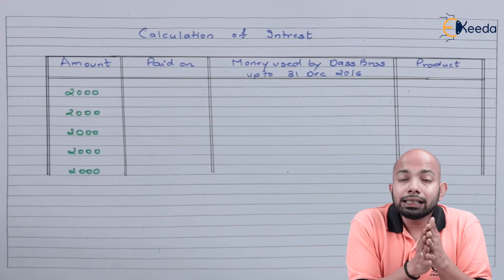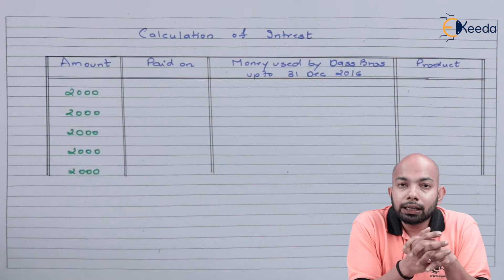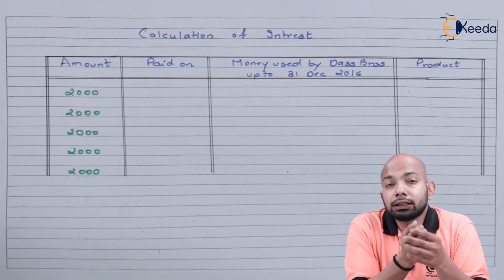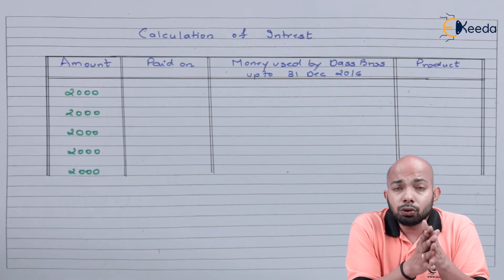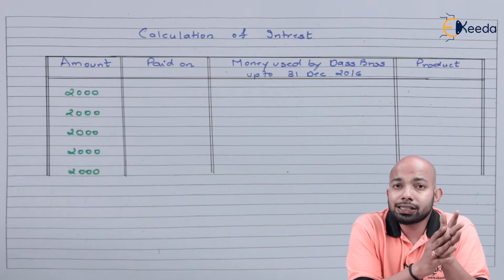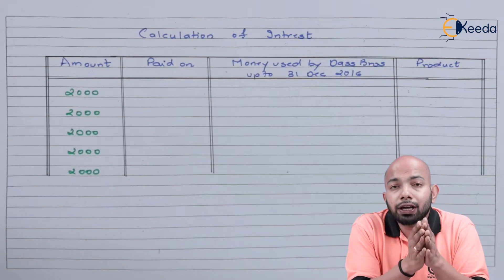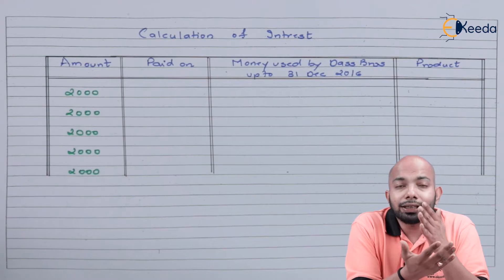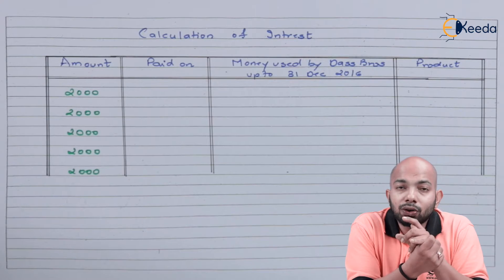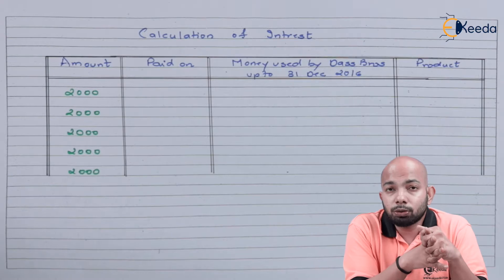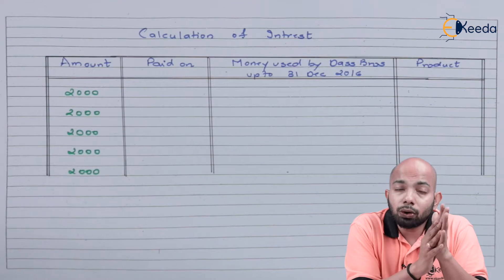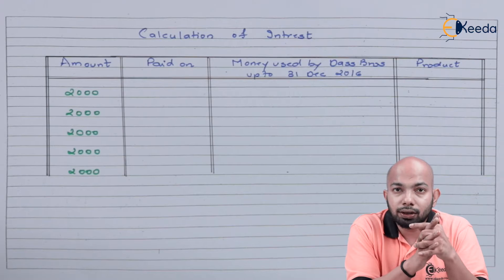The calculation table includes columns for: amount, due date, number of years from the loan sanction date, product, and interest. The equated annual installment is 2,000 rupees, because the total amount of 10,000 is paid off over five years. Now let's figure out at the rate of 5% how much interest will be charged.